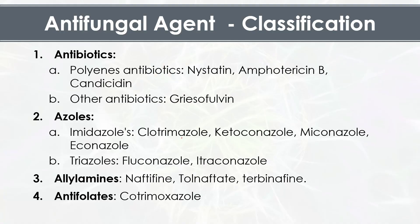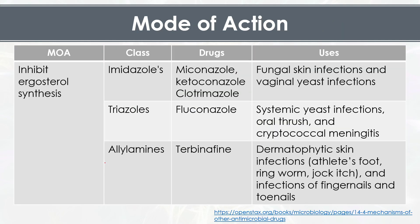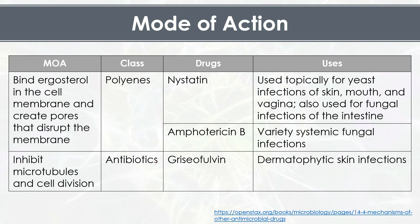This is the classification of antifungal agents. The first class is antibiotics, which has two subclasses: polyenes and other antibiotics. In summary, some antifungal agents act by inhibition of ergosterol synthesis — for example imidazoles, triazoles, and allylamines such as terbinafine. Polyene antibiotics act by binding to ergosterol in the cell membrane, creating pores and disturbing membrane permeability. Griseofulvin acts by inhibition of microtubules and cell division.